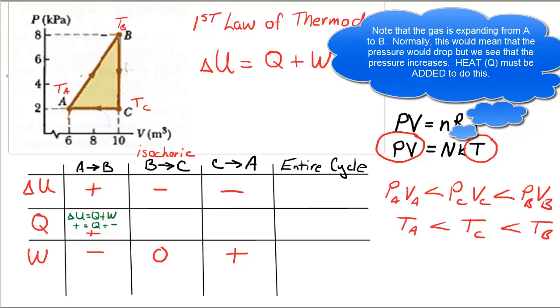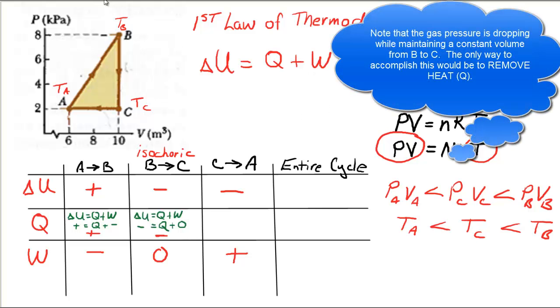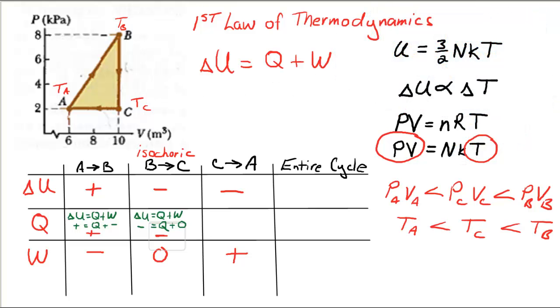Similarly, we can go from B to C in the same process. If W is zero and delta U is negative, then Q must be negative. That's our only choice. And finally, when we go from C to A, we have found out that delta U is negative, W is positive. So if we've got a negative on our left-hand side of the equation and W is positive, then Q must be negative for this equation to work out. We have to remove heat.